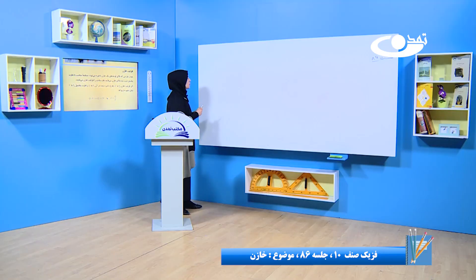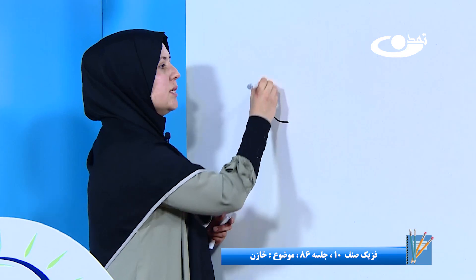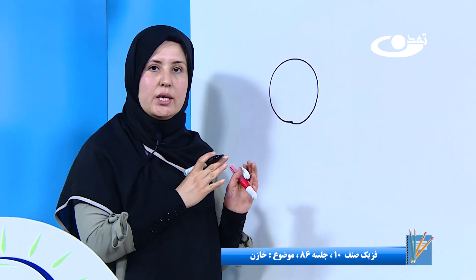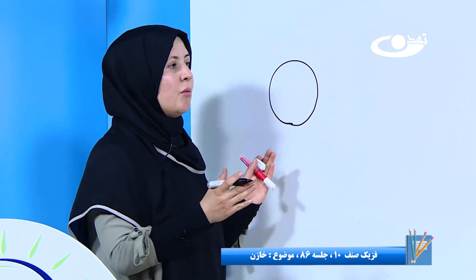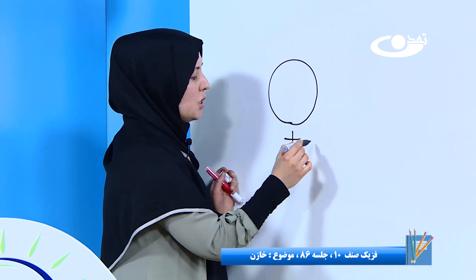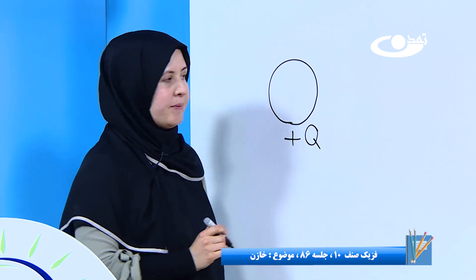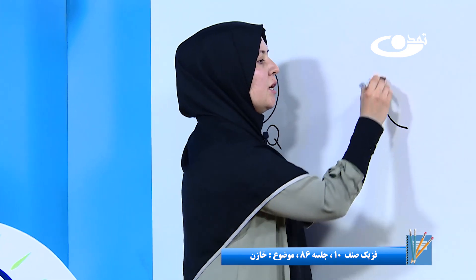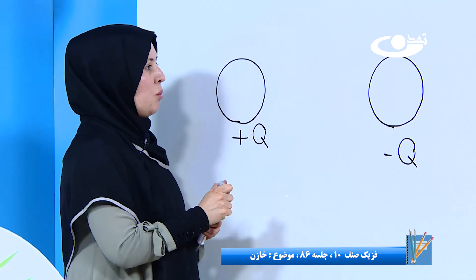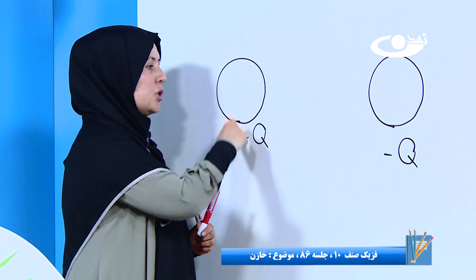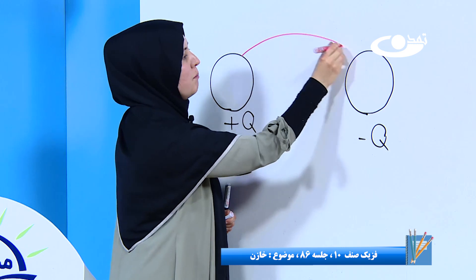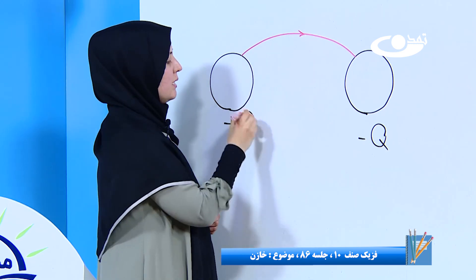هر خازن از خود یک ظرفیتی دارد که می‌تواند مقدار چارج را در خودش ذخیره کند. بیایید برای ظرفیت خازن‌ها یک رابطه به وجود بیاریم. خازن از دو لوحه ساخته شده که یکی دارای چارج مثبت Q و دیگری دارای چارج منفی Q می‌باشد. چارج‌ها از لوحه مثبت خارج می‌شوند به لوحه منفی، پس ما می‌توانیم مسیر حرکت را رسم کنیم.